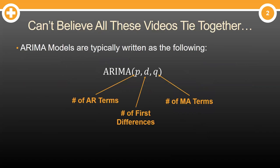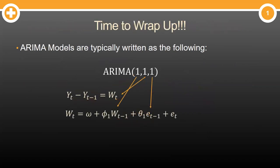Let's wrap this all up. ARIMA models are typically written, as you see here, with three numbers that summarize them. P, the number of AR terms, D, the number of first differences, and Q, the number of MA terms.